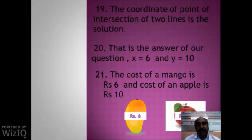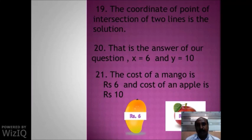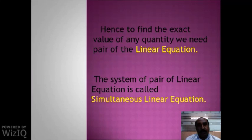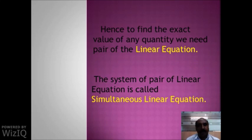The coordinates are x equal to 6 and y equal to 10. So x equals 6 means the cost of one mango is Rs. 6, and y equals 10 means the cost of one apple is Rs. 10. To find the exact value of any unknown quantity, we need a pair of linear equations. The system of a pair of linear equations is called simultaneous linear equations, and we can use them in real life examples.